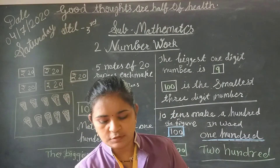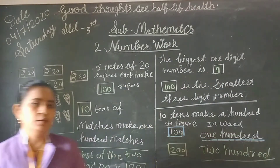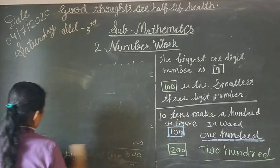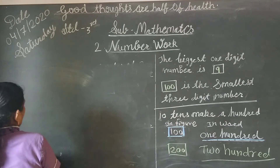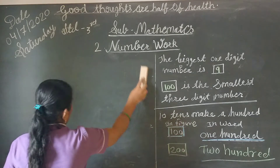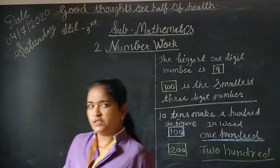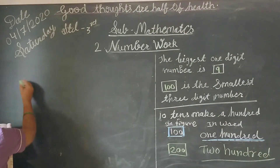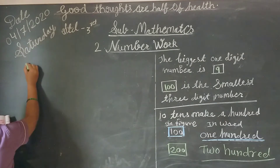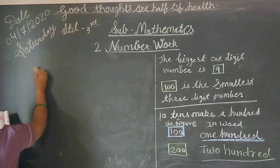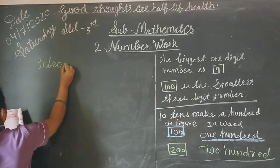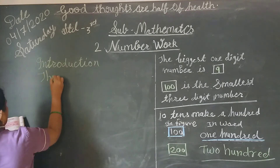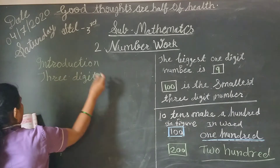Your next topic is the introduction of 3-digit numbers. The smallest 3-digit number is 100. The biggest 1-digit number is 9 and the biggest 2-digit number is 99. Now I will explain again using a place value table.